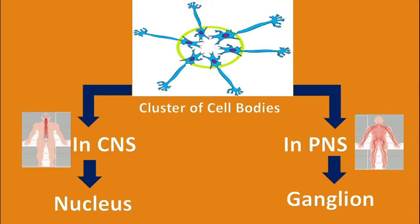When this cluster is present outside the CNS, it is known as ganglion. A cluster of cell bodies present outside the CNS, or in the PNS, is known as ganglion.